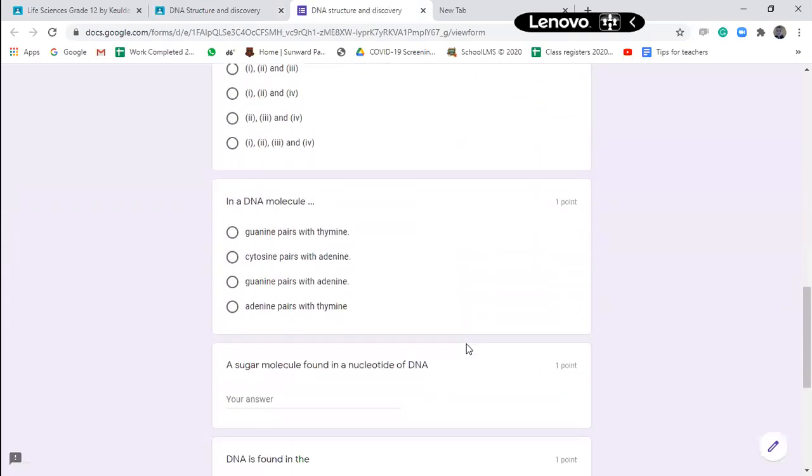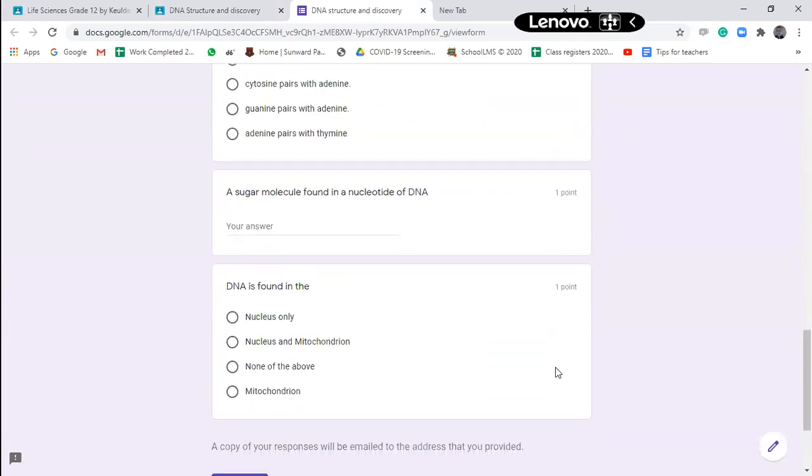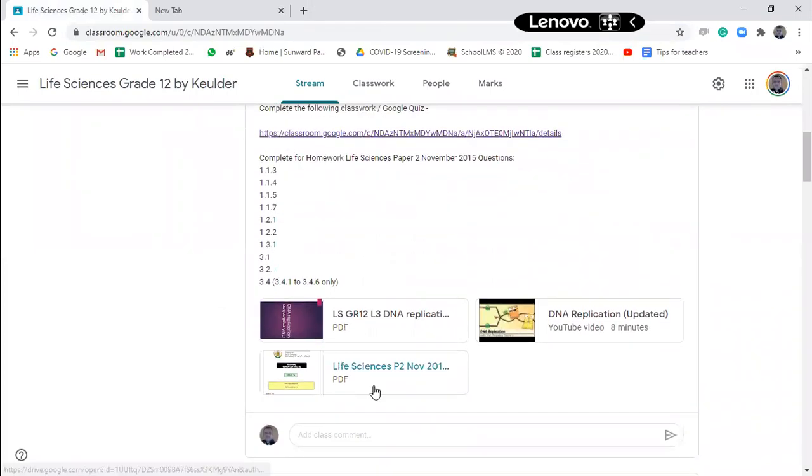With questions, it's an easy one this time, only about six questions I think. There we go. So please complete that. And then on top of that, you then need to go and you need to download. There's the notes, there's an additional video that you can watch, that you should watch from YouTube on DNA replication. And there is your classwork, Life Sciences Paper 2, November 2015. Please complete all of these questions over here, and only those questions.